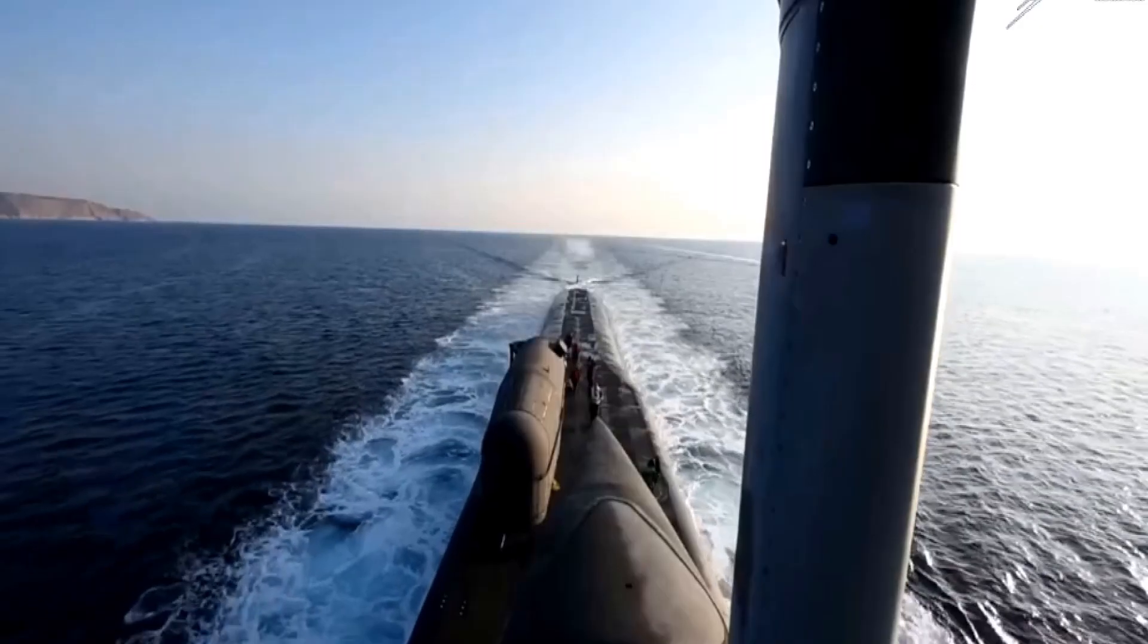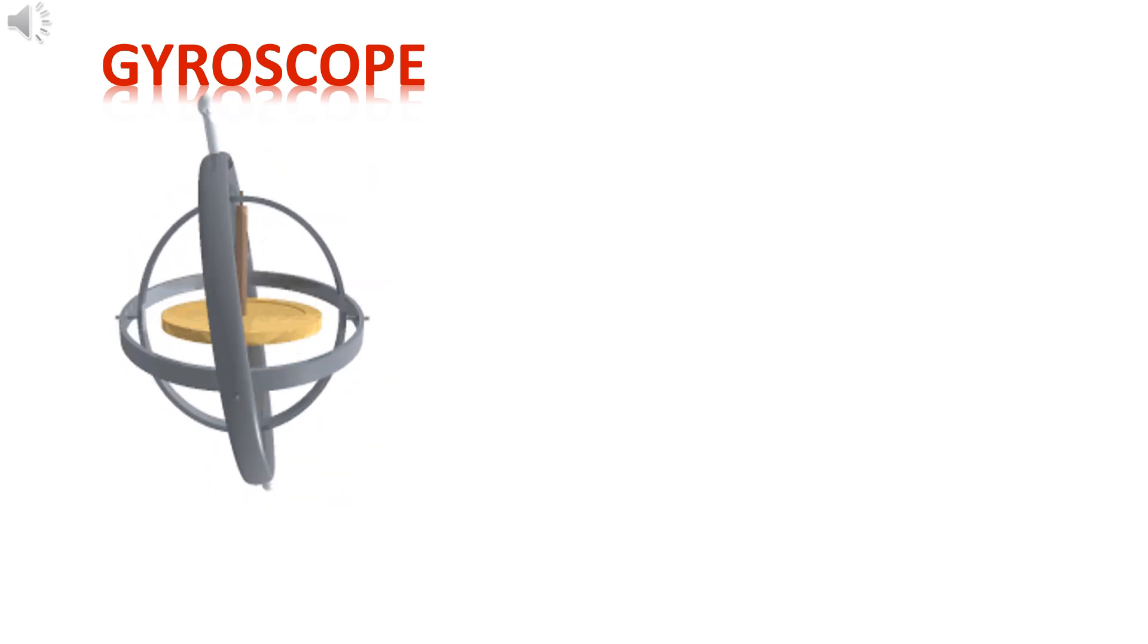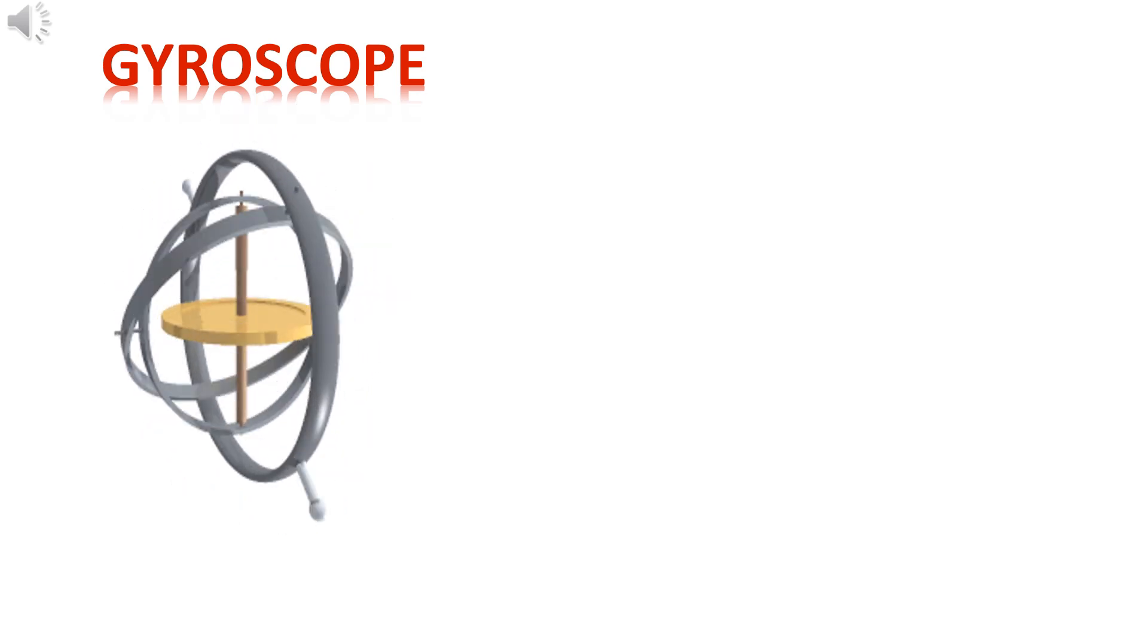Gyroscope and gyroscopic effects are one of the most fascinating physics phenomena. A gyroscope is a device which can maintain orientation and is used mainly in inertial guidance and navigation systems.